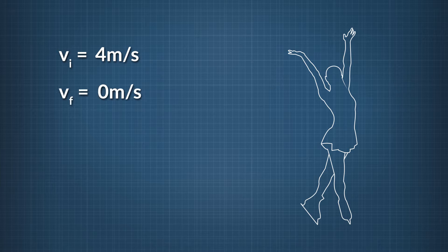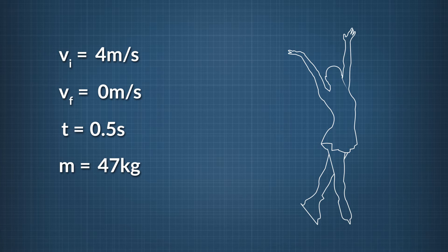Let's look at one more example. An ice skater skating in a straight line at 4 meters per second comes to a sudden stop in half a second. If the mass of the ice skater is 47 kilograms, how much force is exerted on her in coming to a stop?